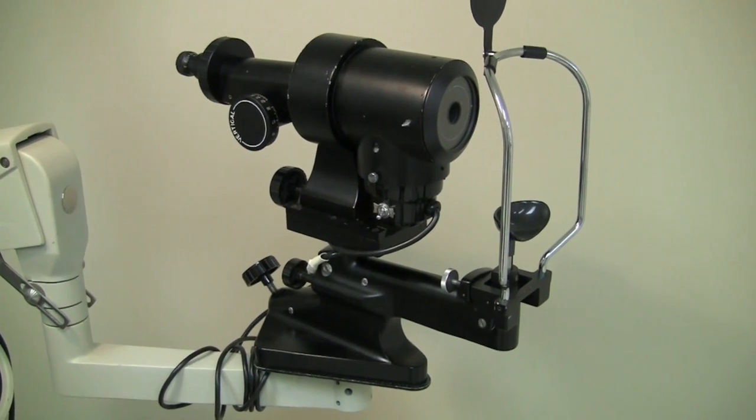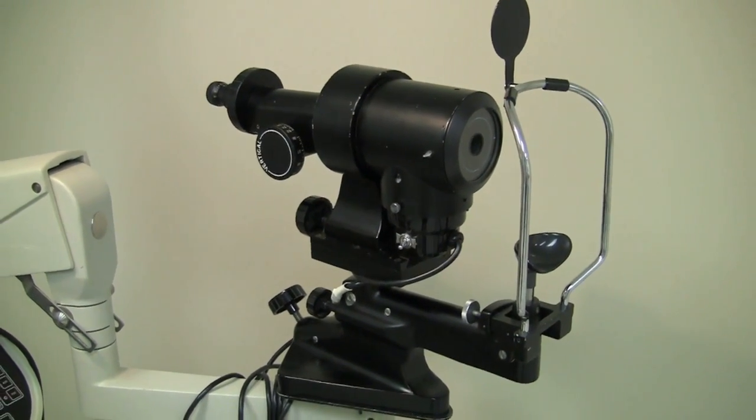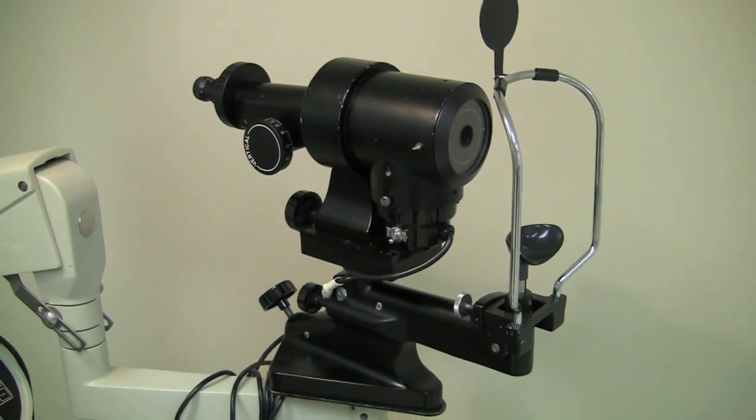As you've been learning about in theory and methods, this is a keratometer. It's used to measure the radius of curvature of the cornea, which we use to indirectly figure out the power of the cornea.